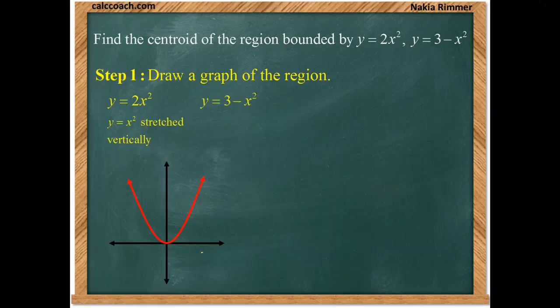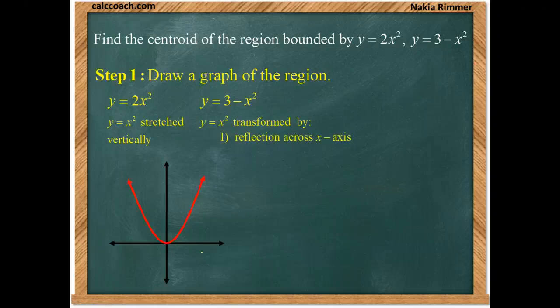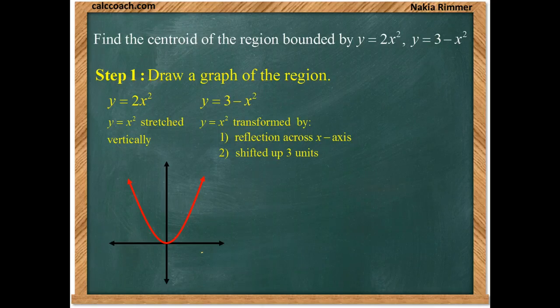Now, the other equation is y equals 3 minus x squared. So that's also a parabola, y equals x squared, that's been transformed in two ways. One is that it's a negative in front of the x squared, so it's been reflected about the x-axis. But the other is the 3. If you want to think about it as plus 3 after the minus x squared, it's been shifted up 3 units.